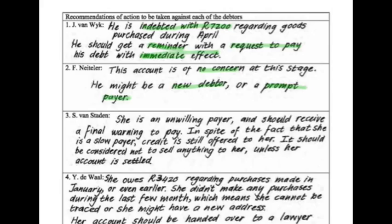S. van Staden is definitely an unwilling payer and should receive a final warning to pay. In spite of the fact that she's a slow payer, we are still offering her credit — this should be reconsidered. She should not be sold anything further unless the account is settled. Once her account is settled it's fine and she can buy again, but until then she is not allowed to buy on credit anymore.